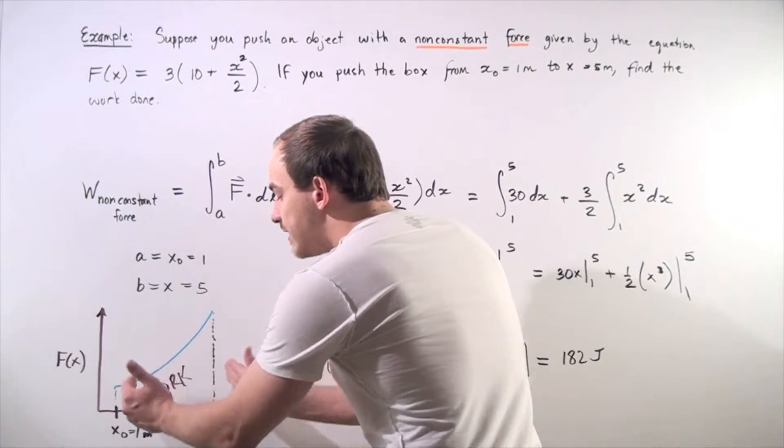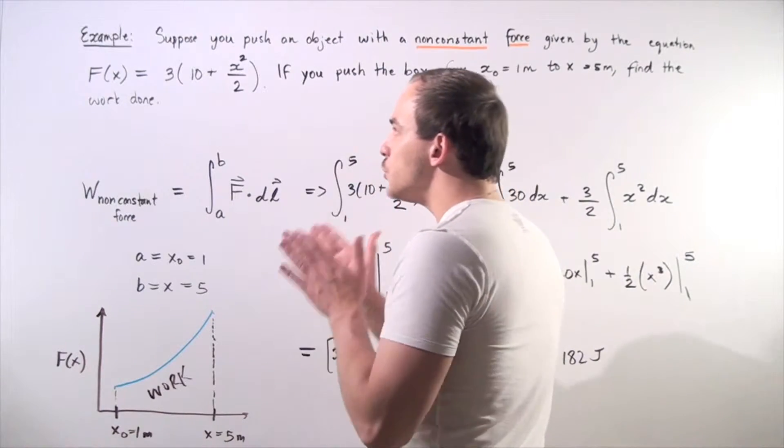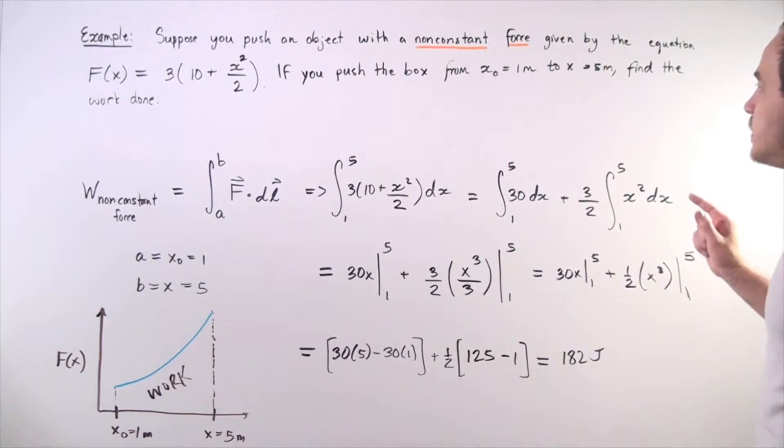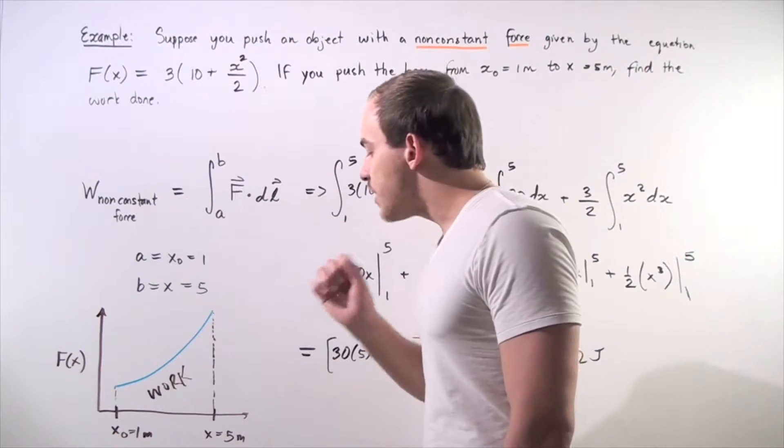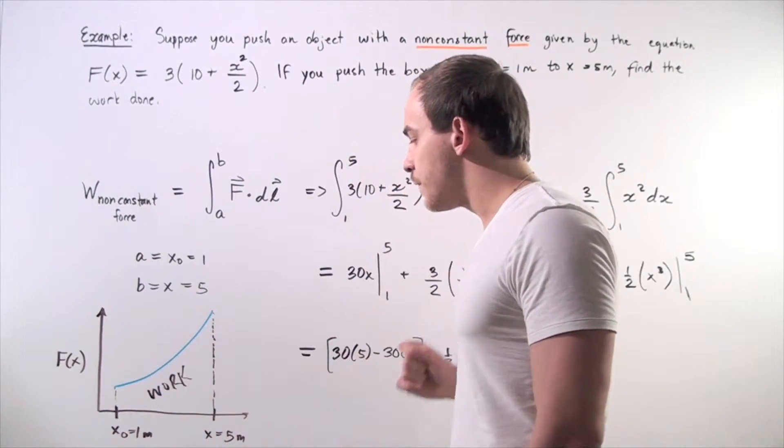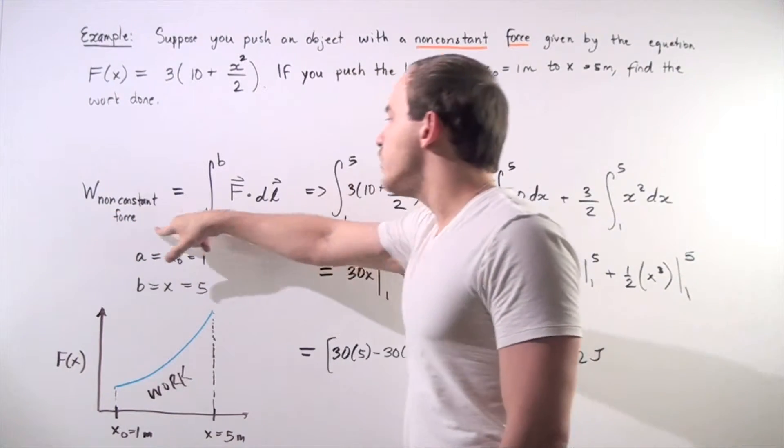This area will give us the exact amount of work required to push our box along the x-axis from a position of 1 meter to a position of 5 meters. So, that means that we must integrate this function from initial to final position. We use the following formula.